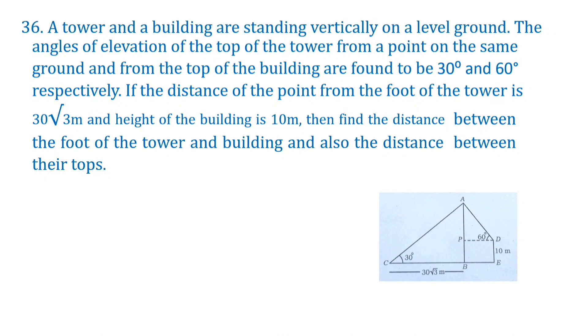A tower and a building are standing vertically on the level ground. AB is the tower. DE is the building. On the same ground they are standing. This is the ground.